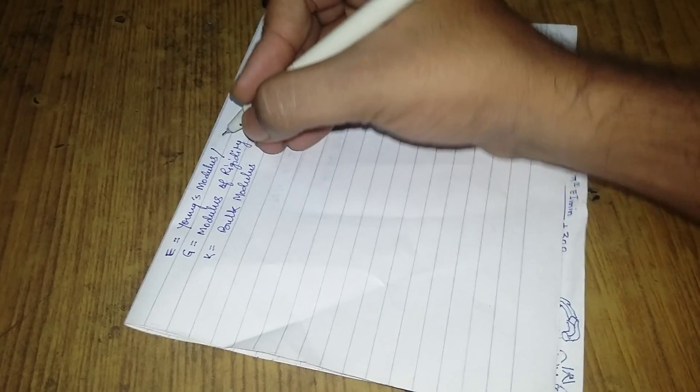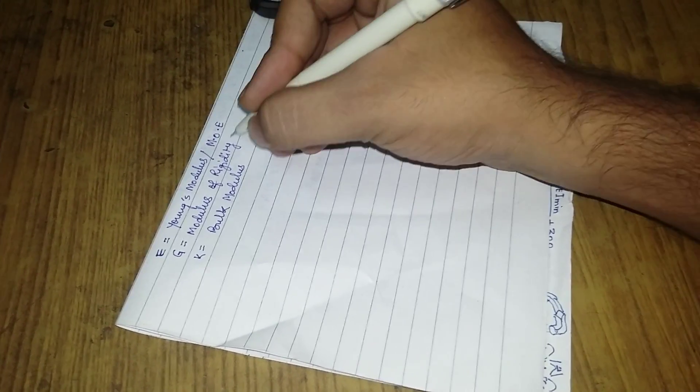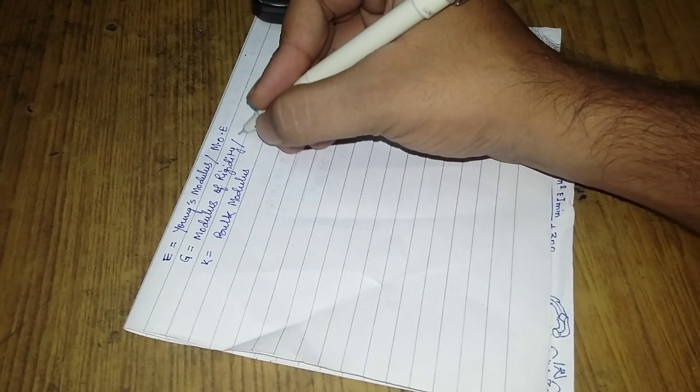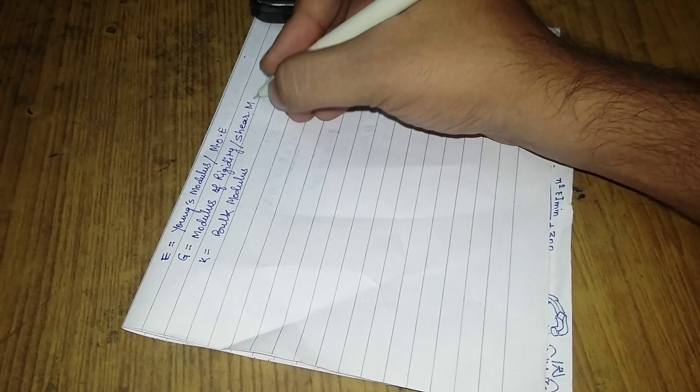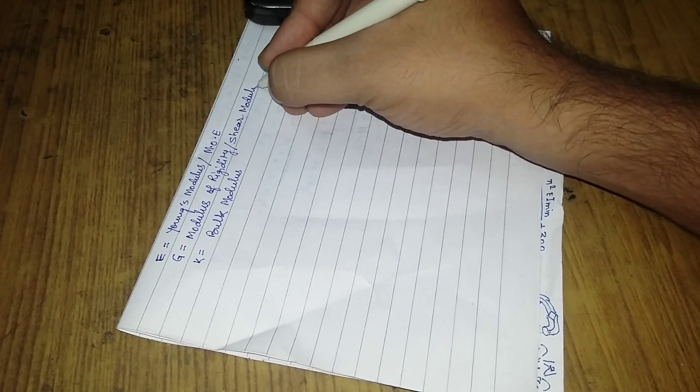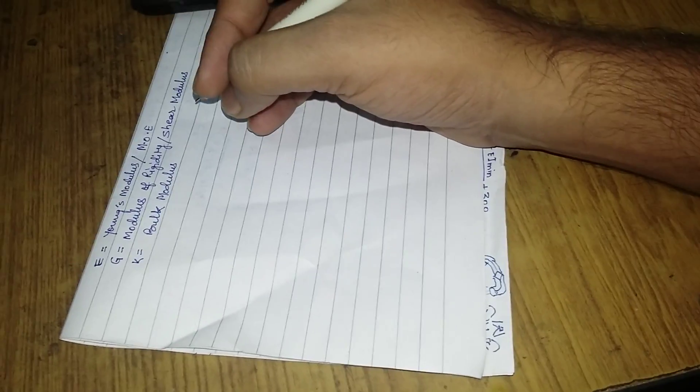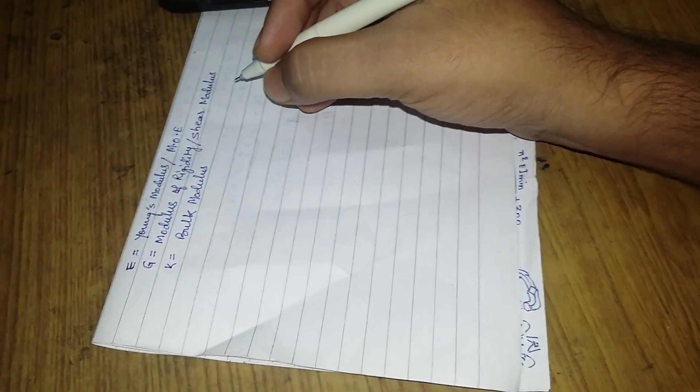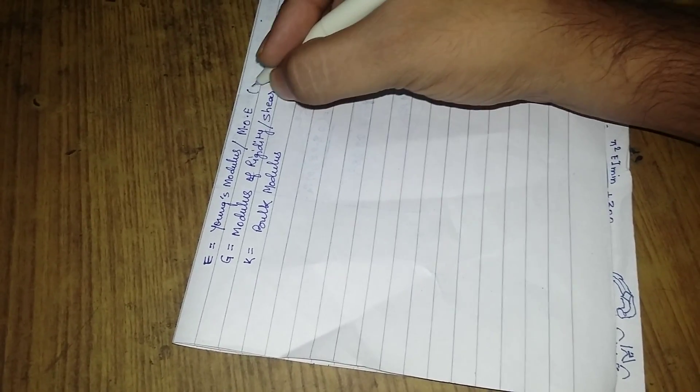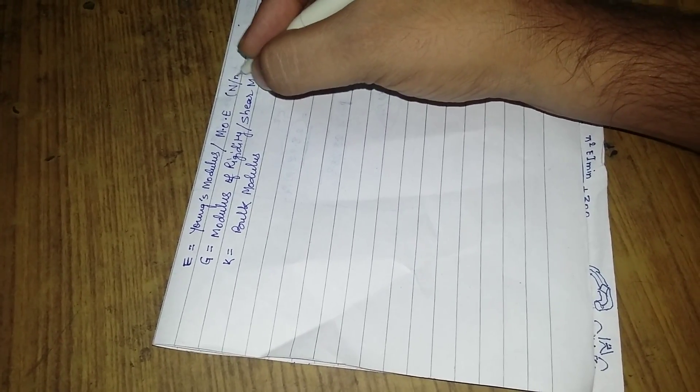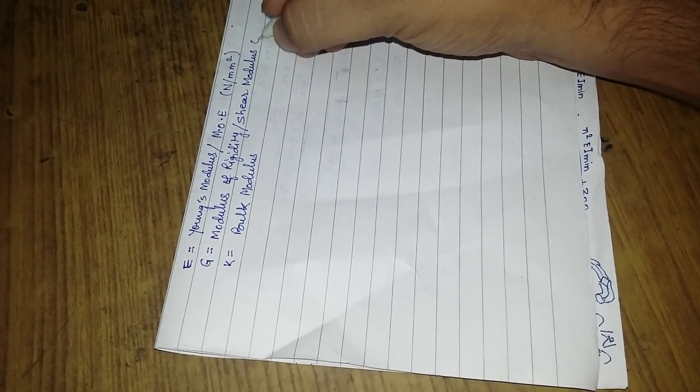The other names for Young's modulus is modulus of elasticity, and the other name for modulus of rigidity is shear modulus. Generally in our gate exams there is a question about the SI unit of all these three quantities.